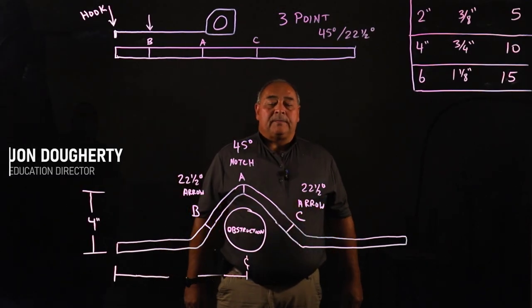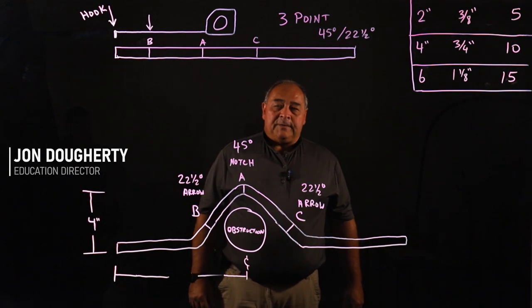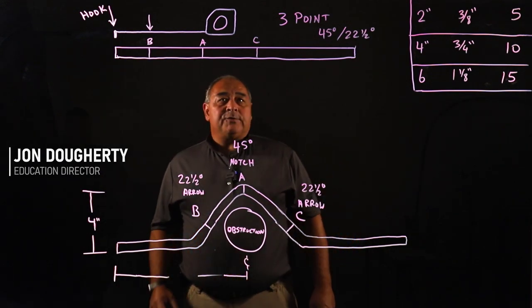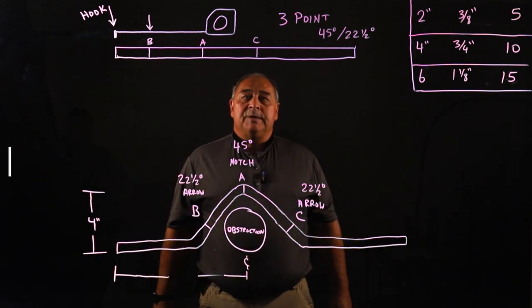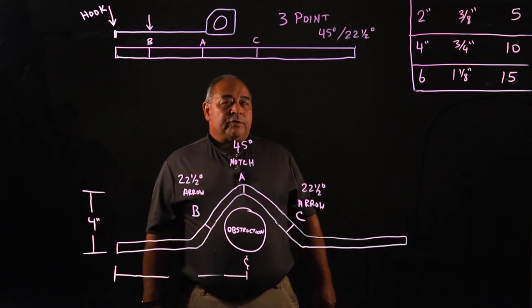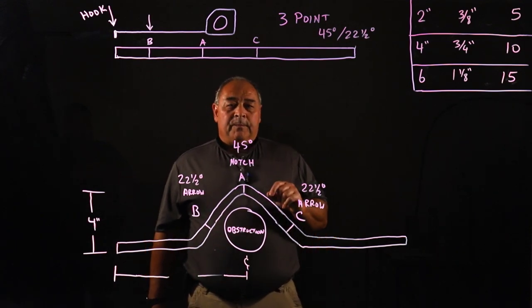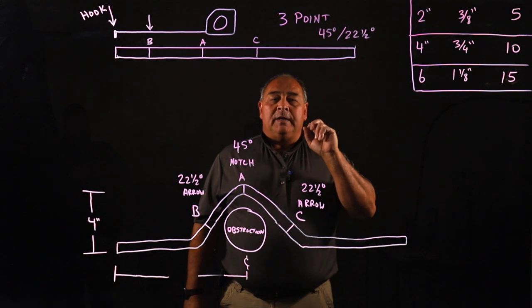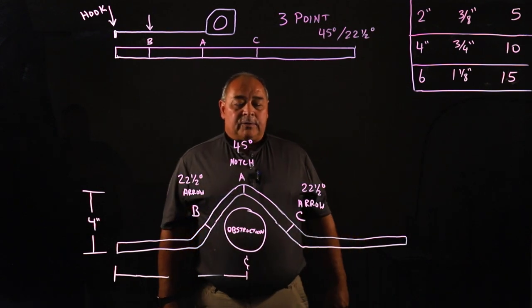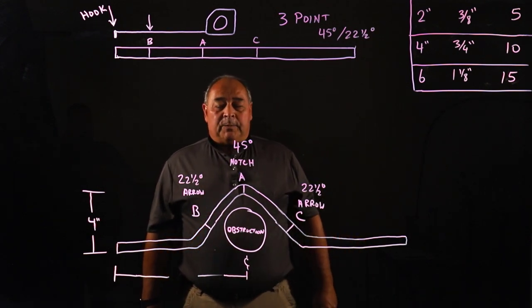We're going to talk about a three-point saddle. And we're going to be very specific because the manufacturers of benders typically have instructions in their manuals for a 45 and 22 and a half degree three-point saddle.